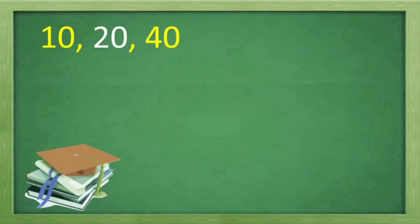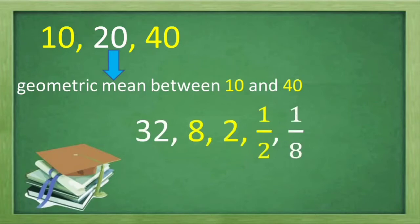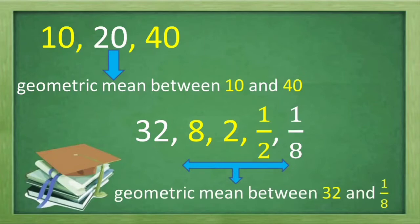For example, given the sequence 10, 20, 40 — 20 is the geometric mean between 10 and 40. And given 32, 8, 2, 1, ½, ⅛ — the geometric means between 32 and ⅛ are 8, 2, and ½.